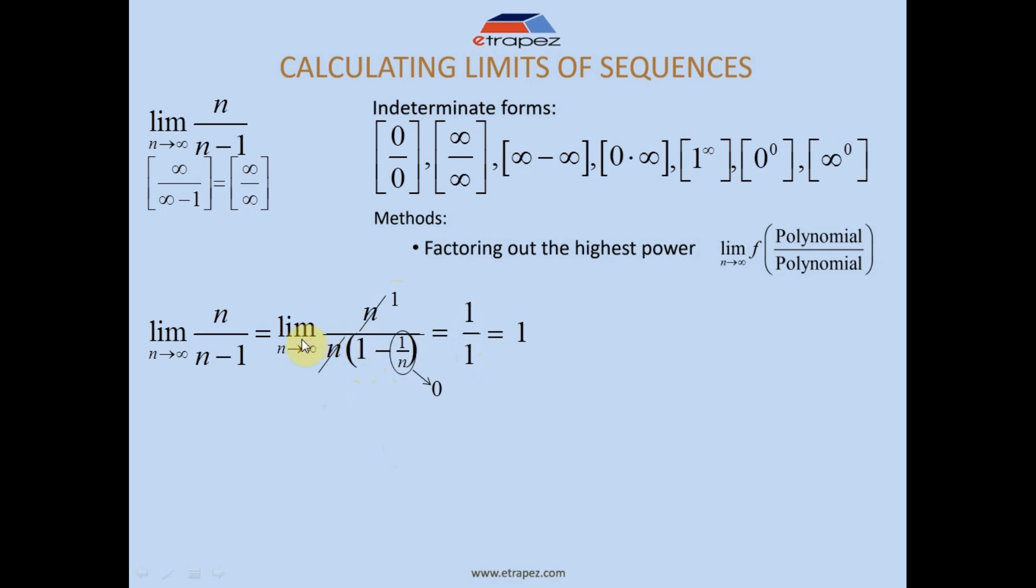Notice that here I wrote the limit and here I didn't. Why? The rule is as long as n is in the expression, there is a limit, right? Sure, if n disappears and here it disappeared, then you write without the limit, right?